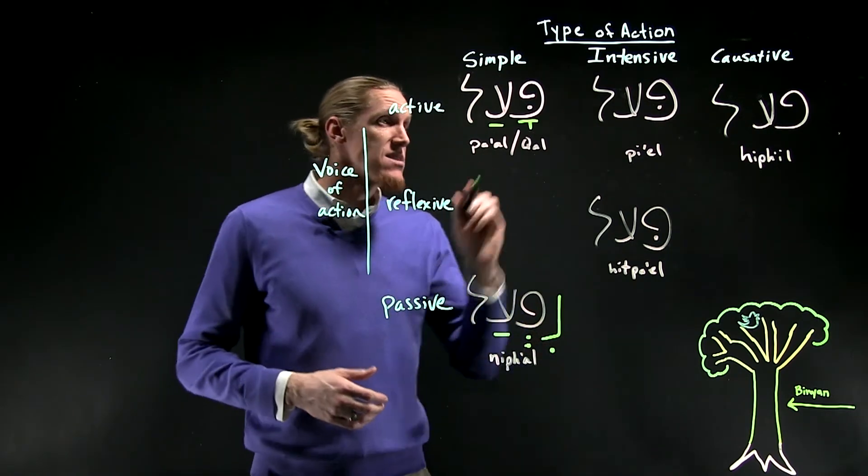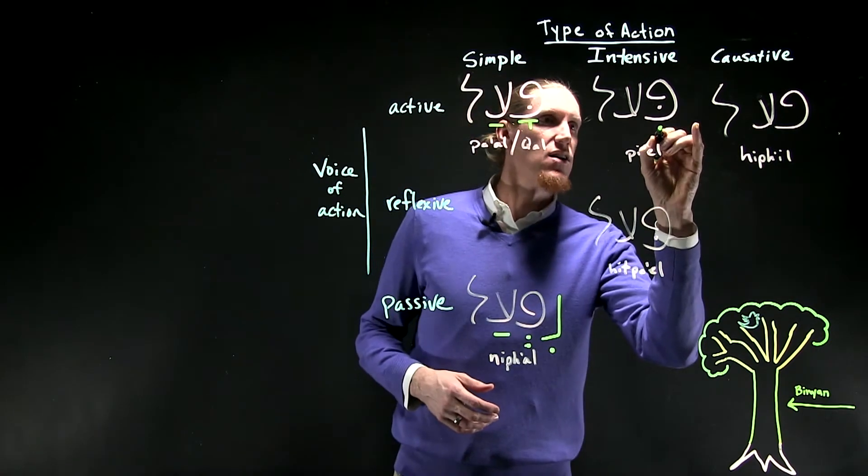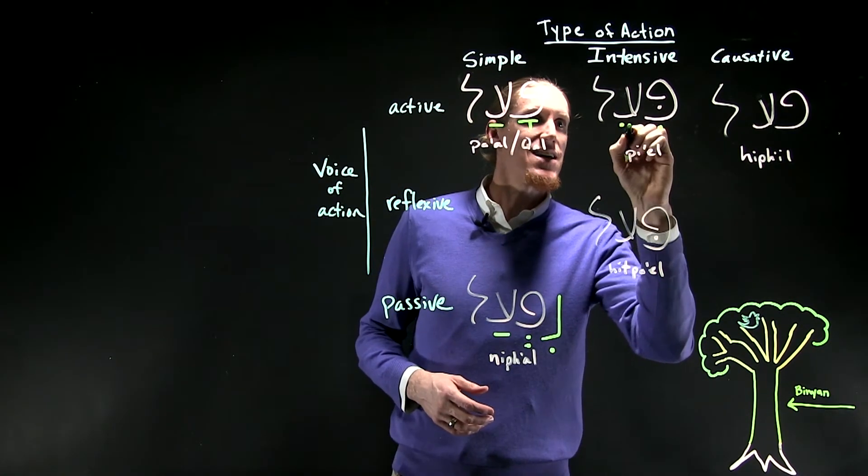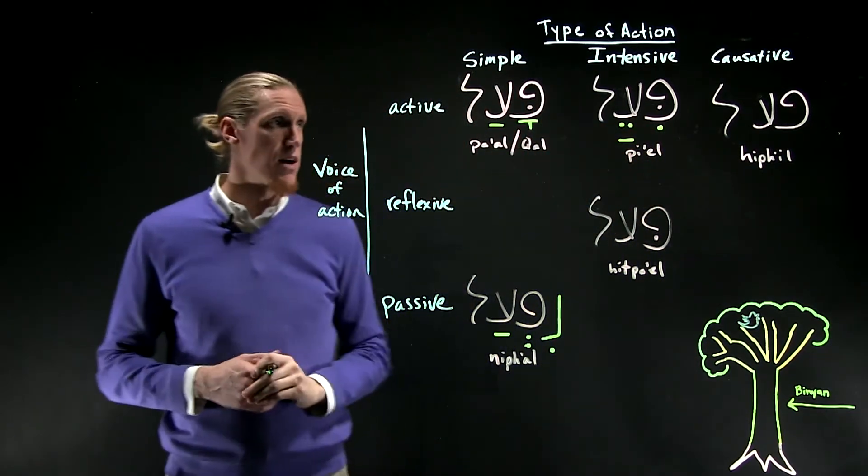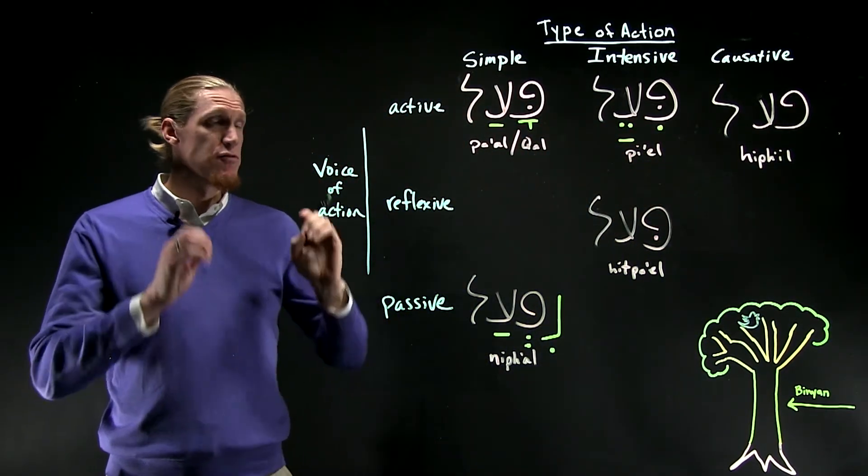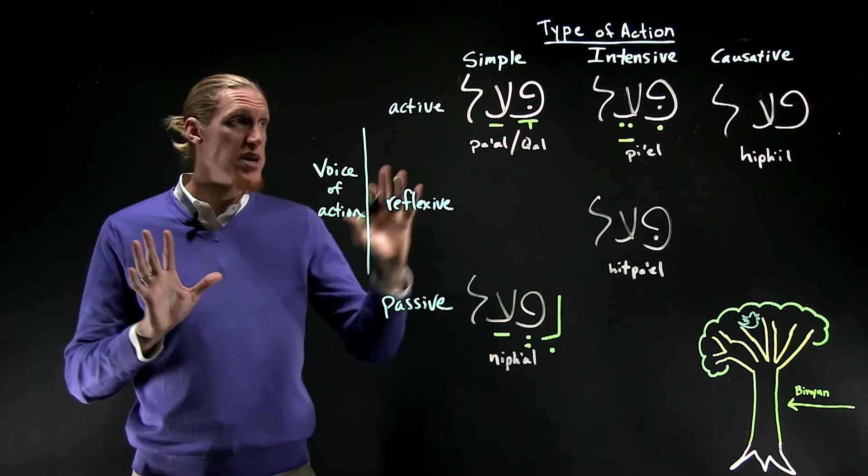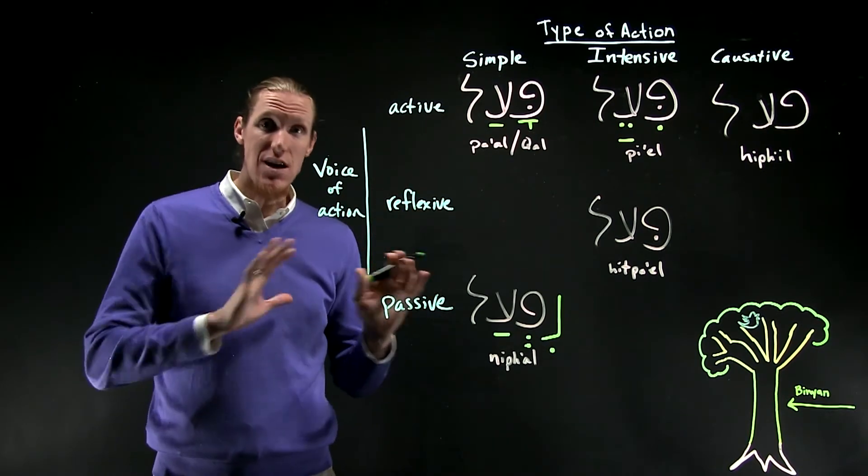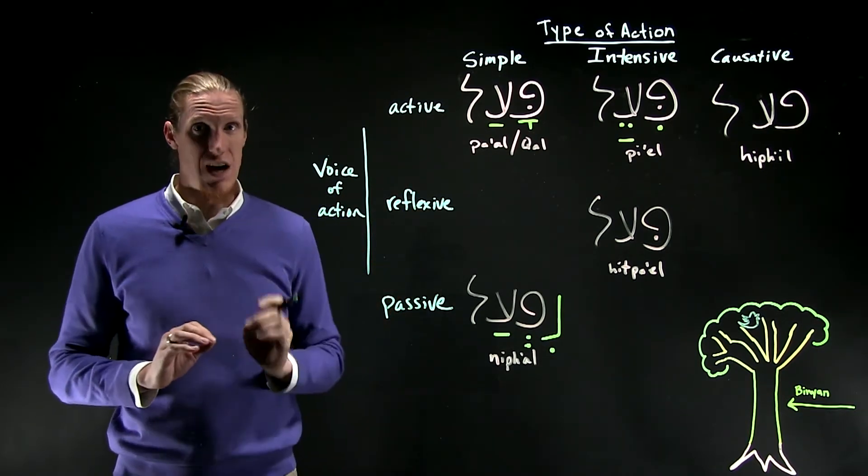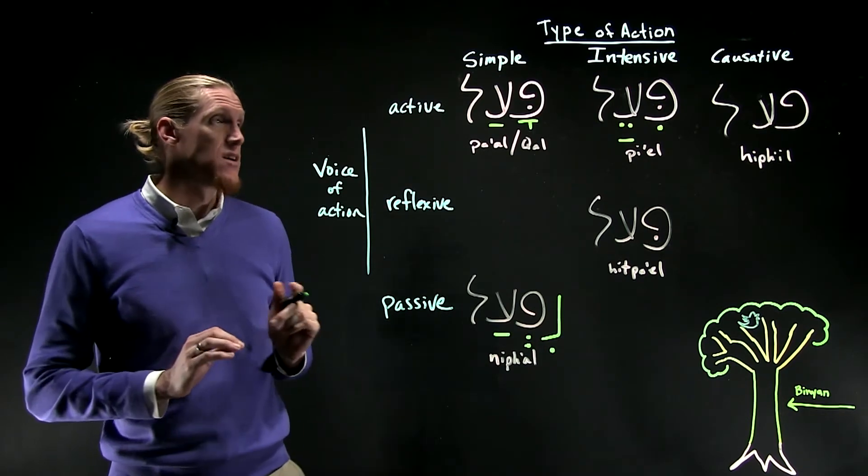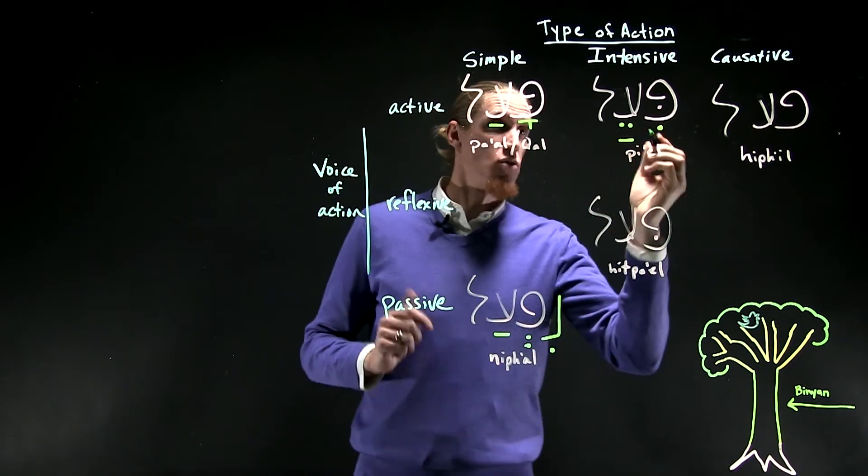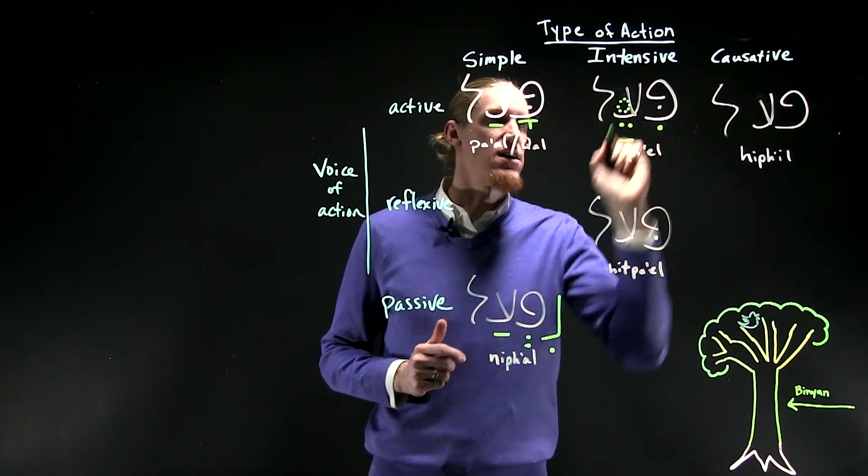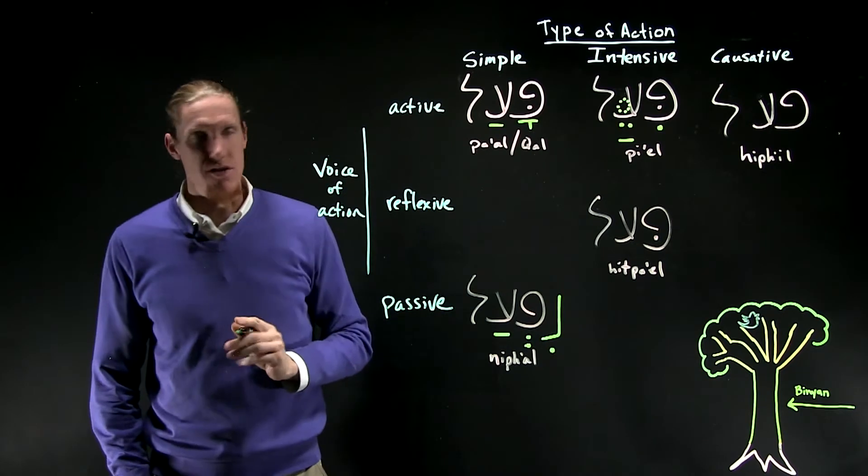In the intensive, the pi'el, we have e-ay. Or perhaps e-ah. In some cases you have e-ah. So the vocal sign for the pi'el is e-ay or e-ah. The visual sign of the pi'el is a hirik under the first root letter and a dagesh forte in the second root letter.